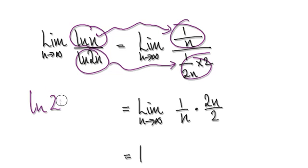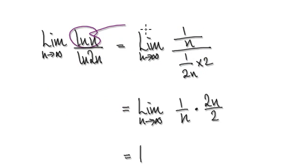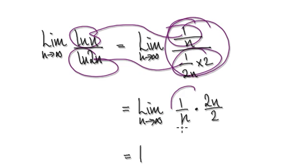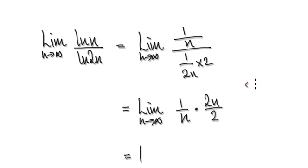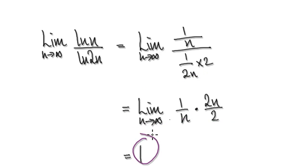Because if I were to ask you to differentiate the natural log of 2n, you would imagine it as a bubble. It's going to be 1 over the bubble, times the derivative of the bubble itself, which is 2. So differentiate the top, that gives you this; differentiate the bottom, that gives you this. Tidy this up: it will be 2n over 2n, and the limit of this is going to be 1.